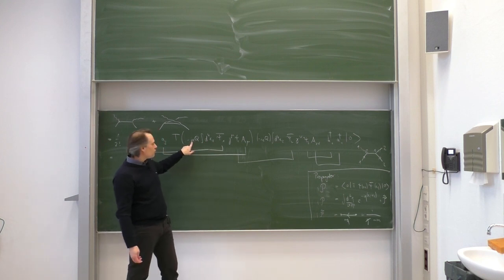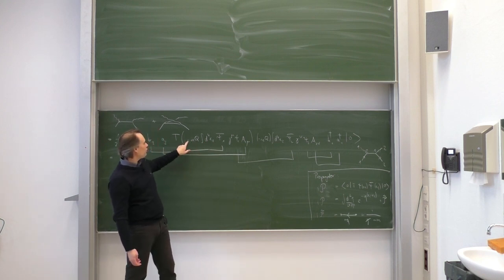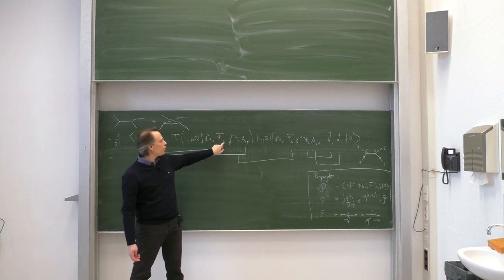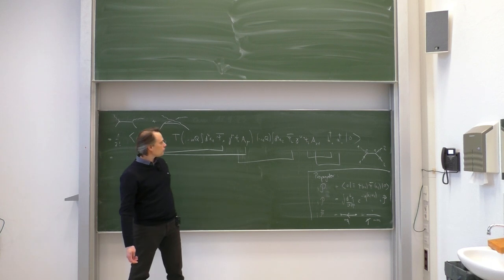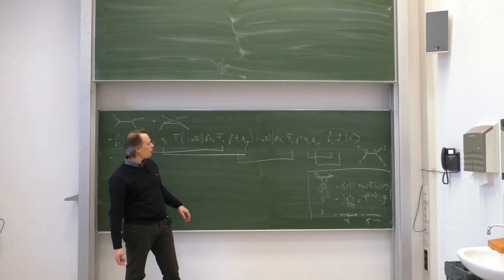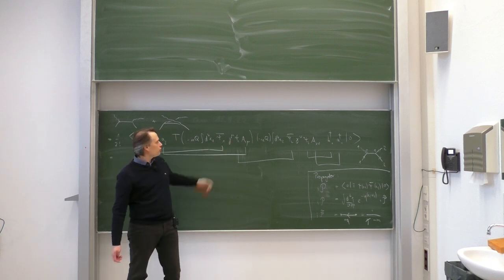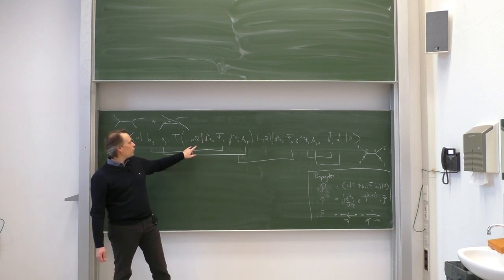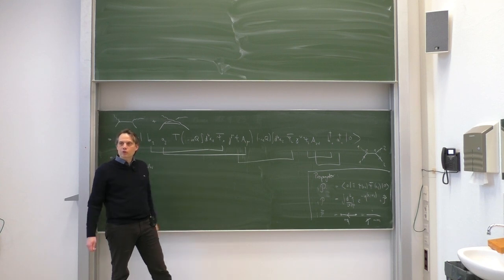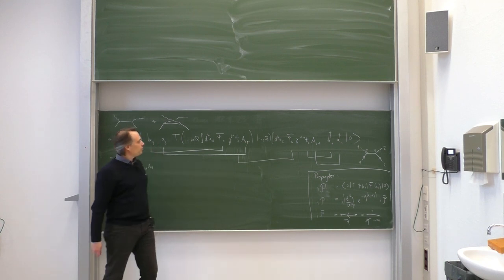The interaction Lagrangian density for QED is minus e_q times psi-bar gamma-mu psi A_mu. It's a gauge-invariant Lagrangian — this is the interaction term coupling the photon to the electron in a Lorentz-invariant way. The factor of i comes from e to the i times this integral.